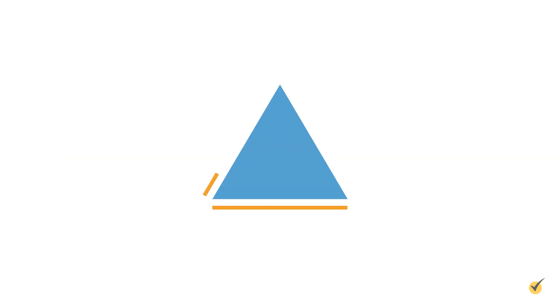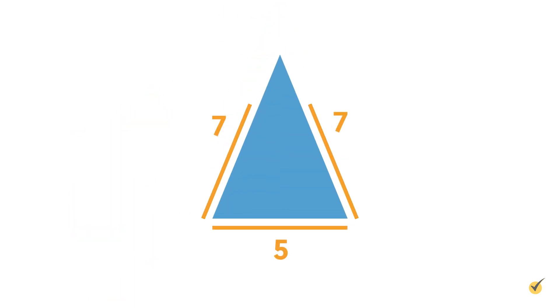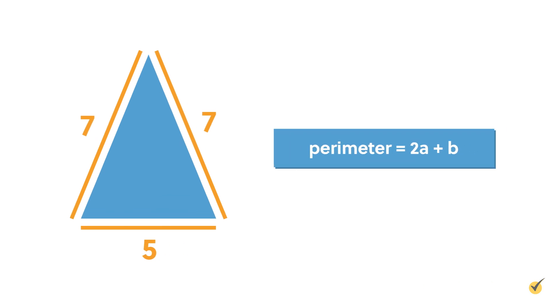This principle also applies with an equilateral triangle. Because all three sides are the same, the perimeter is equal to 3 times a. An isosceles triangle has two sides that are the same, so the perimeter is equal to 2a plus b. I think you get the point.